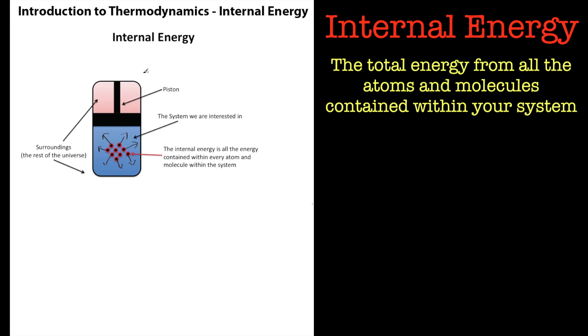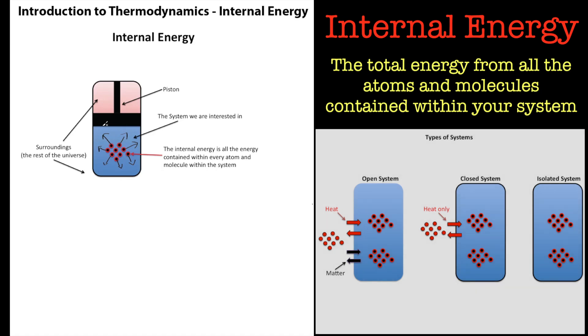Now the energy will change if we do something to these atoms or molecules within our system. And one way of doing that is to provide energy to the system. So if we've got a closed system where we can add heat to the system. So I'll just add a bit of heat there and these wavy lines are heat.